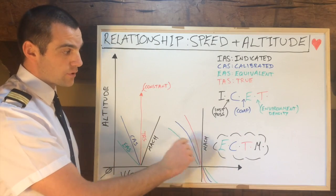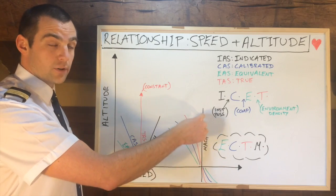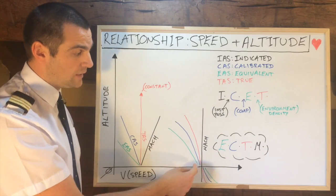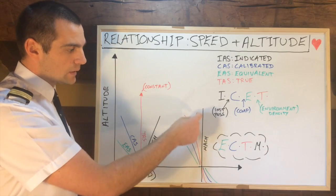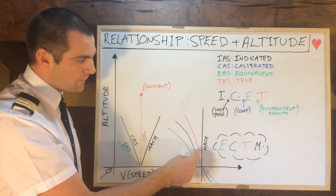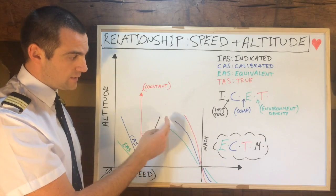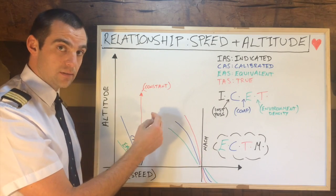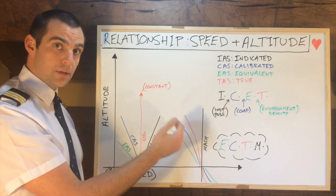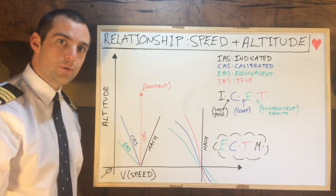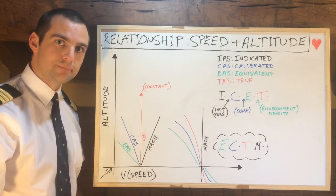After a certain altitude, we will continue our climb at a constant Mach number. Now, what's the danger here? If we continue to climb, eventually we will reach our stall speed, because our indicated airspeed is going to be dropping. So you can see why this is important.